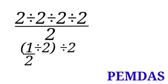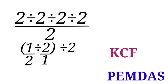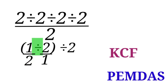One divided by two is the same as one over two, divided by two — which is two over one in the question. We now have one over two divided by two over one. We are going to apply KCF here inside the parentheses: K is for Keep, C is for Change, and F is for Flip. So we keep one over two, change the division sign to multiplication, and flip two over one.